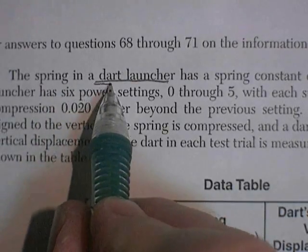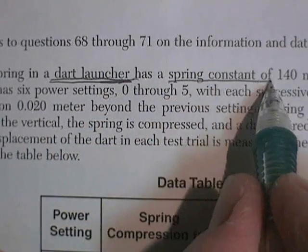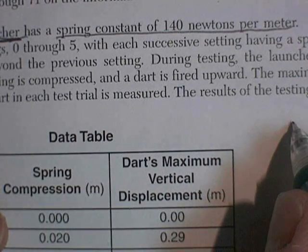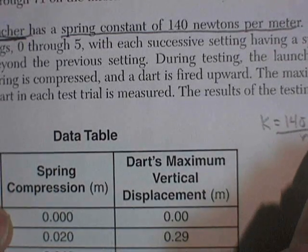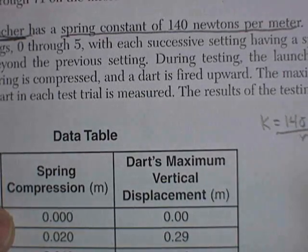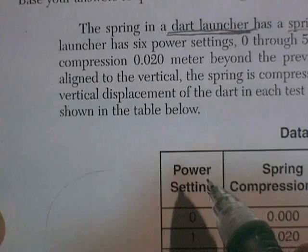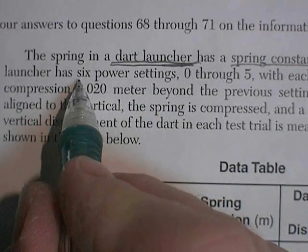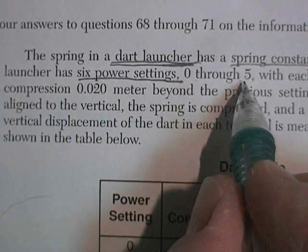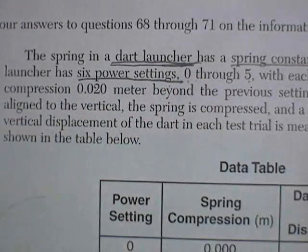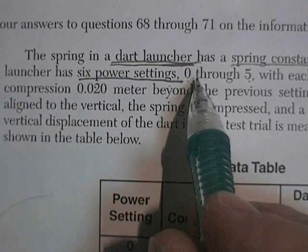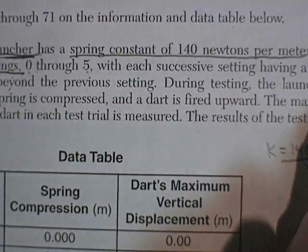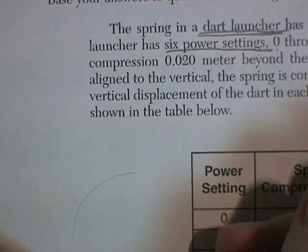So the spring in a dart launcher, a Nerf gun, has a spring constant of 140 newtons per meter. So the spring constant is 140 newtons per meter, which would take 140 newtons to pull it back a meter, which is pretty good. The launcher has six power settings. Six power settings. I'm going to get one of those. Zero through five. Why would you have a power setting of zero where it goes zero? That's just, nah.